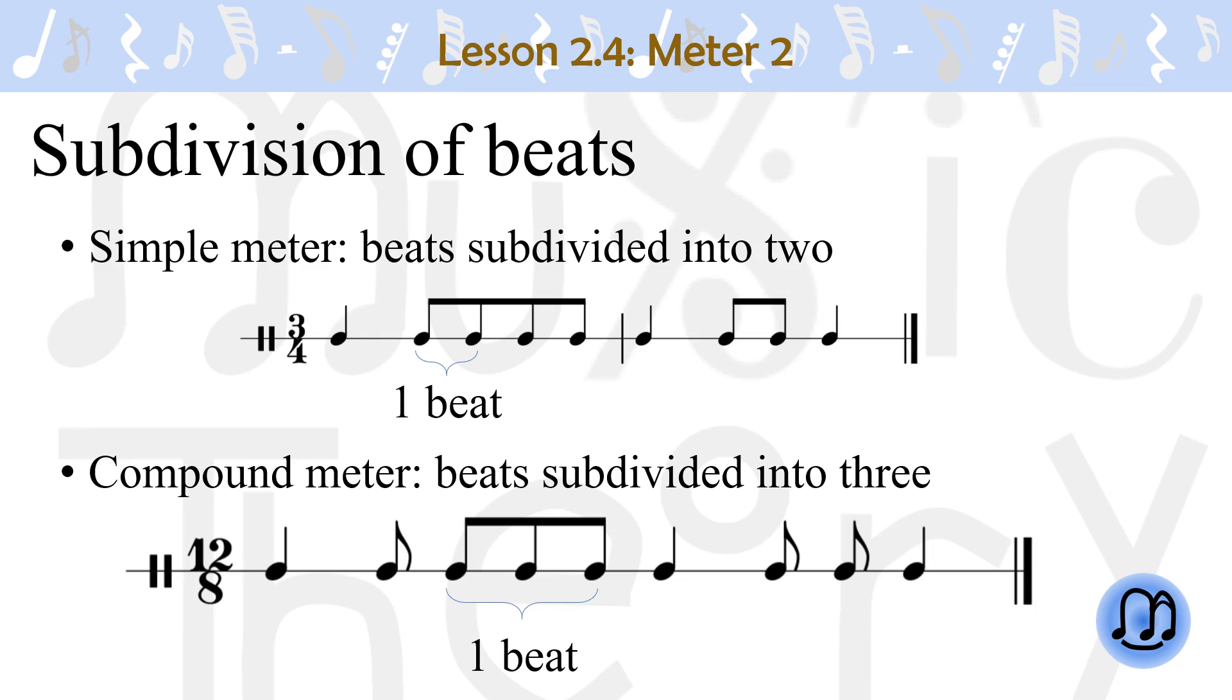Subdivision of the beats. In a simple meter, the beats are subdivided into 2. As you see in the example, each beat is divided into 2 eighth notes. In the second example, which is a compound meter, each beat is subdivided into 3 parts.